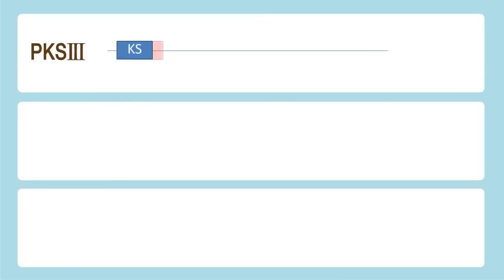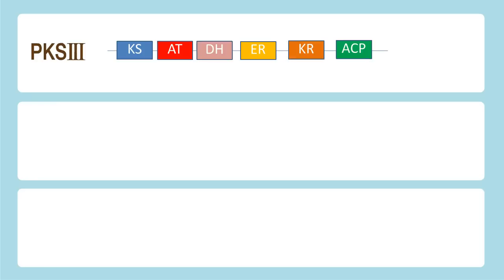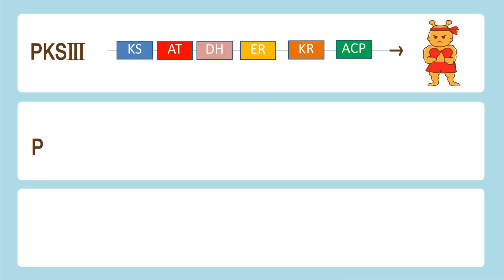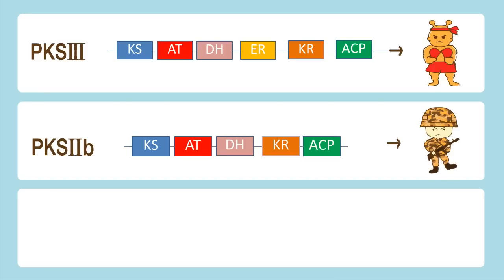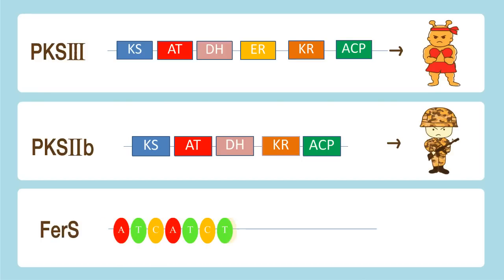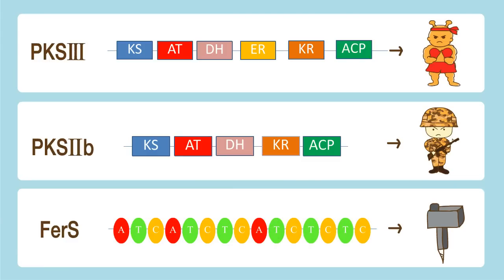PKS3 consists of three principal domains: ketosynthase, acetyltransferase, and acyl carrier protein. PKS2B is similar to PKS3, except it does not contain the enoyl reductase domain. The non-ribosomal peptide synthetase NRPS is arranged in a modular structure, where each module consists of adenylation, thiolation, and condensation domains.